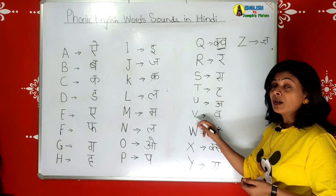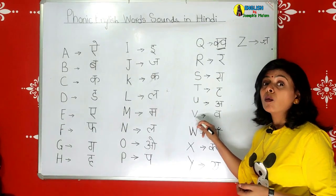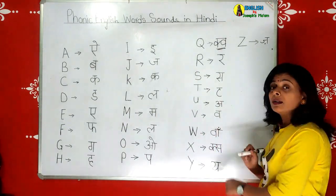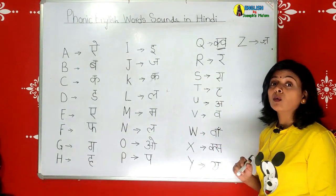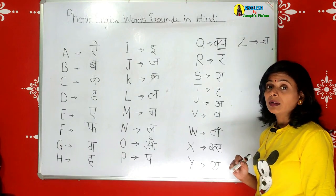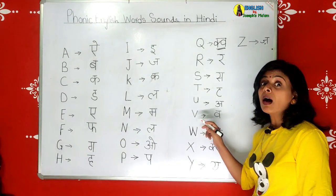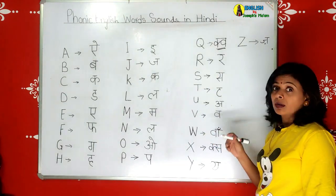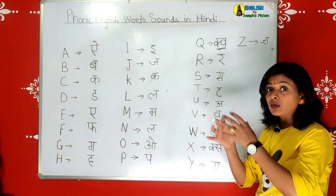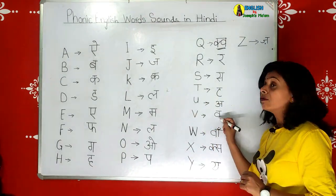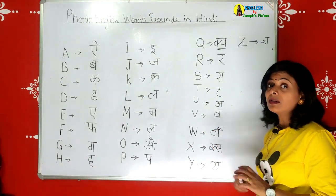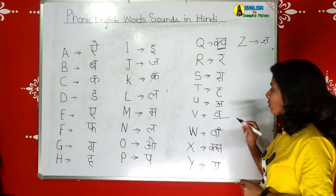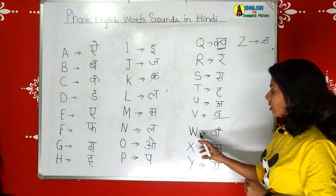Next is V for van. The Hindi phonic is 'va' - van. Some say it incorrectly. Va, va, va - it means guldastha. This is va - the Hindi phonic is 'va', the va sound is coming.